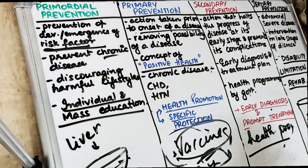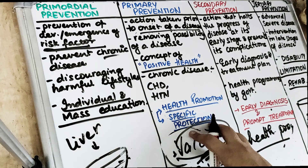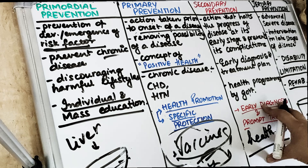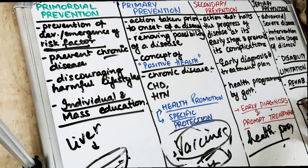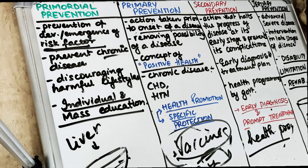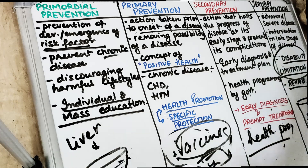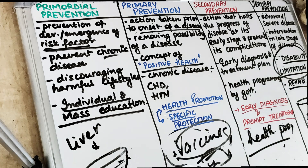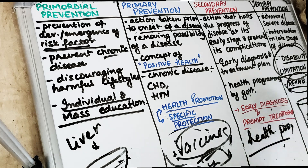Tertiary treatment is the intervention done at the late stages. For example, talking about polio — we gave the vaccine at the primary stage, treatment at the secondary stage. Now because of polio, the child has become handicapped and is not able to get up from the bed. So giving physiotherapy and making the child self-sustainable is the tertiary prevention. This is disability limitation — we don't want the person to develop disability, we want to rehabilitate the patient.